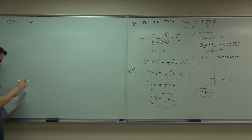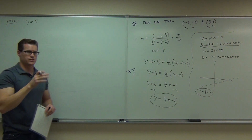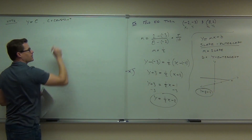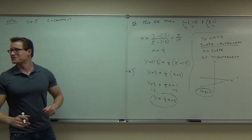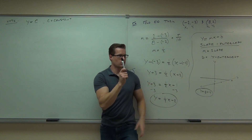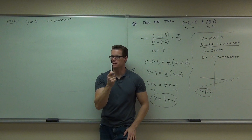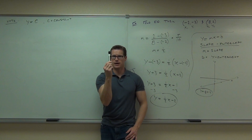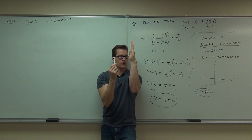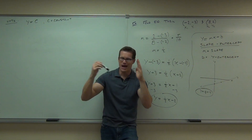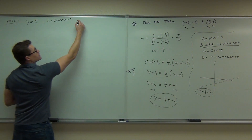If I told you that this was a line — Y equals some constant C — what type of line is that? They're all straight lines. What I think you mean is: is this a vertical line or a horizontal line? It's horizontal. The variable you have tells you which axis it crosses. If you have Y equals a constant, you're going to have a Y-intercept at that number and it's going to be horizontal. So when Y equals a constant, you're talking about a horizontal line.